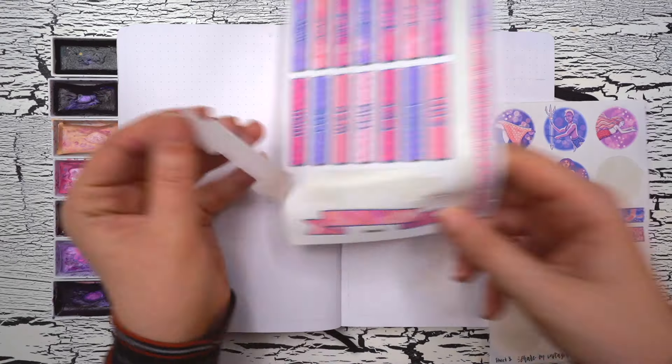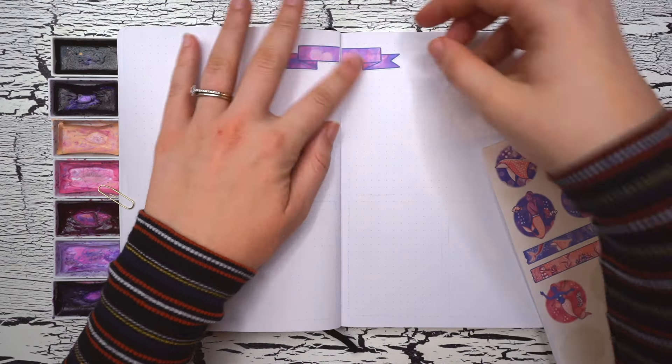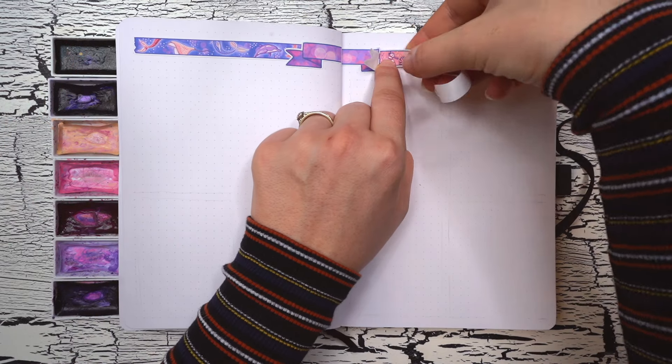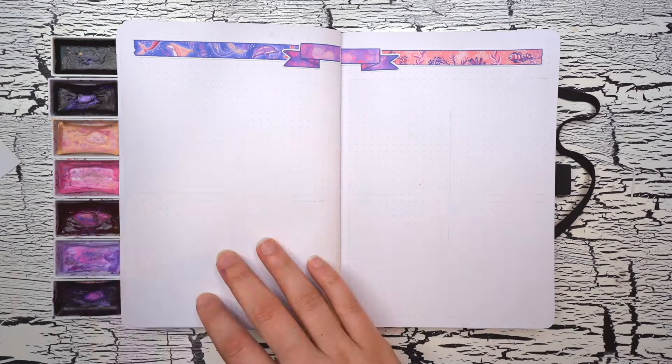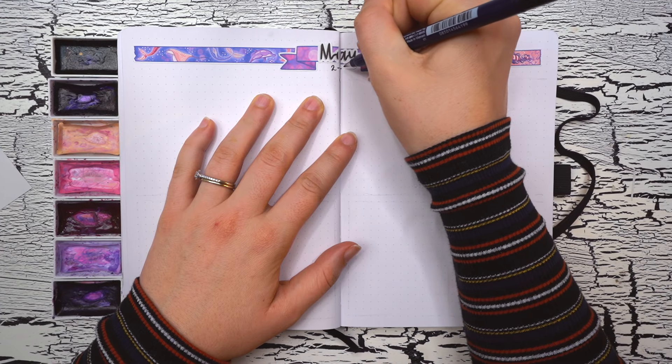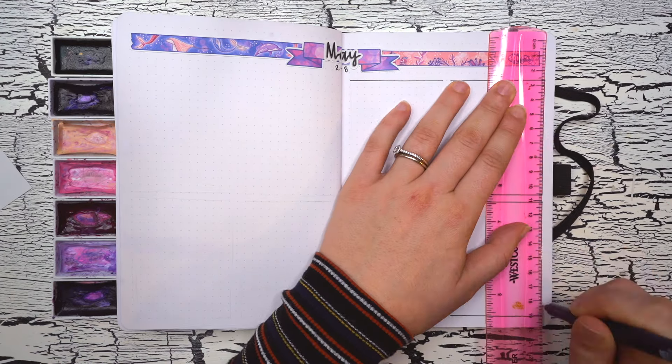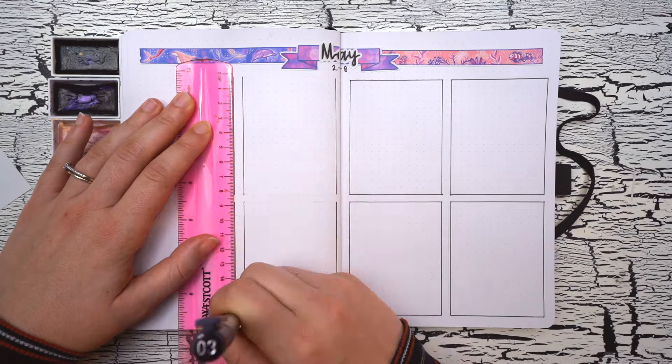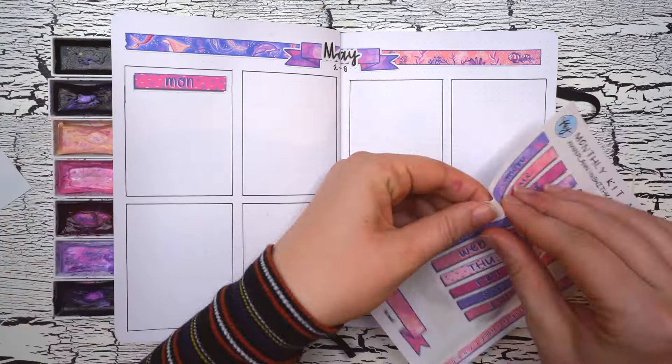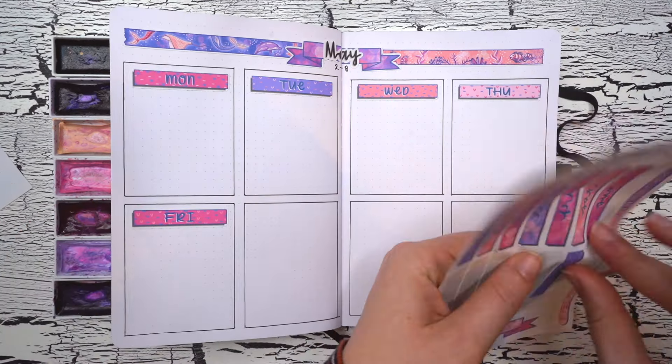With that quote page finished, that is it for this final monthly spread, and on to the last pages of this setup, which is going to be my first weekly log for the month of May. My weekly logs are an essential part of my bullet journal routine, as it's where I keep track of all of my daily to-do lists. So here I'm creating my weekly for May 2nd through 8th, starting off with my main header along the top of the page. Each day this week is going to get its own box, and each one is 12 and a half spaces wide by 16 spaces tall.